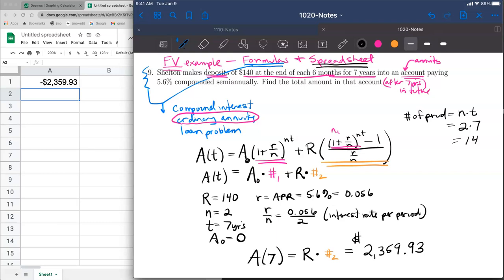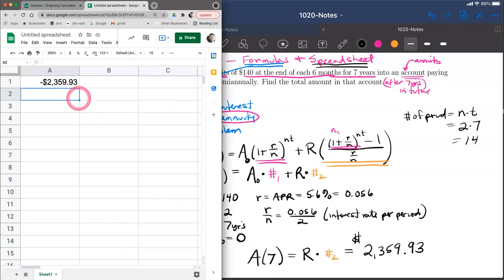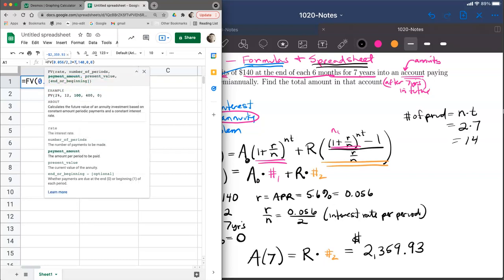This concludes the video on calculating the future value of an annuity using formulas and the FV function in Google Sheets. As you cycle through the inputs, you get reminders about what each should be. The most important one to be careful about is the rate—make sure to use the interest rate per period, which is 0.056 divided by 2.